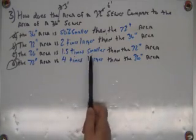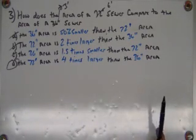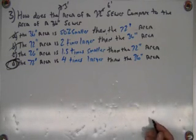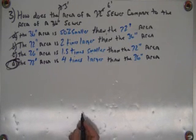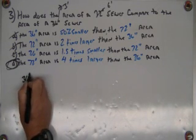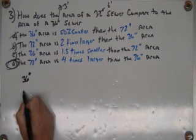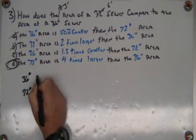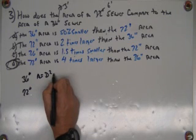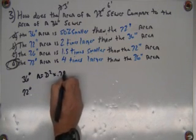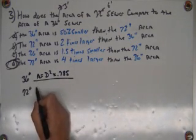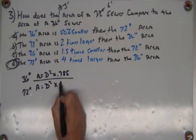Now, this could have said 36 is 4 times smaller than the 72. You've got to read them and make sure you pick the right one. So we haven't picked up a calculator or done anything. We've read the question and we go, okay, it's 4 times larger. Let's do the math. I'm going to take a 36 inch pipe and then a 72 inch and we'll compare them. And the area is equal to diameter squared times 0.785. And I'm going to pretend they're round and I'll do it both ways.